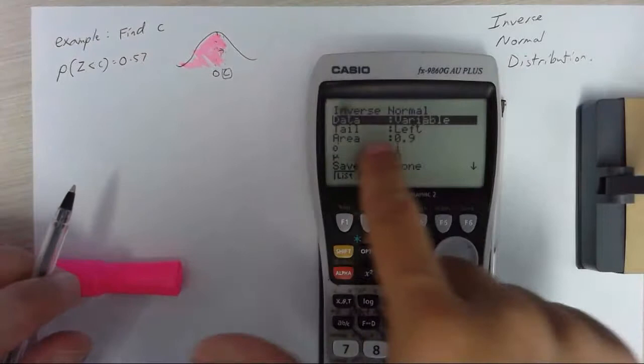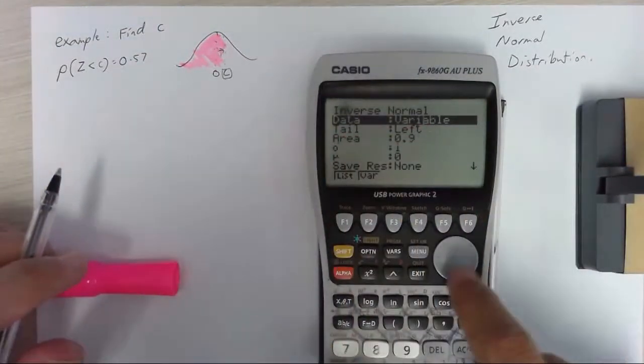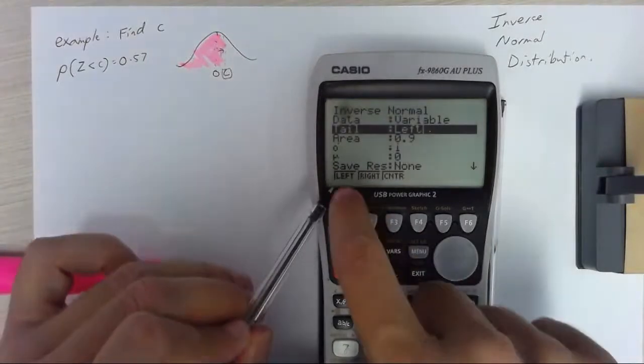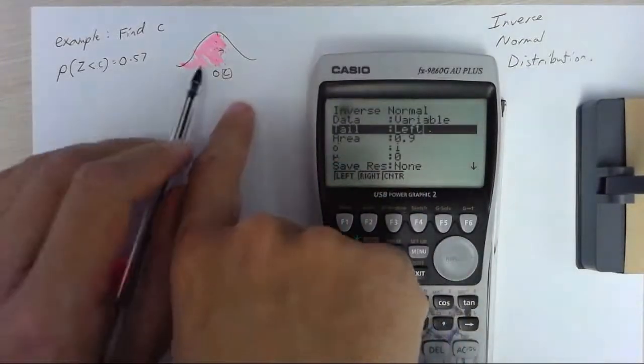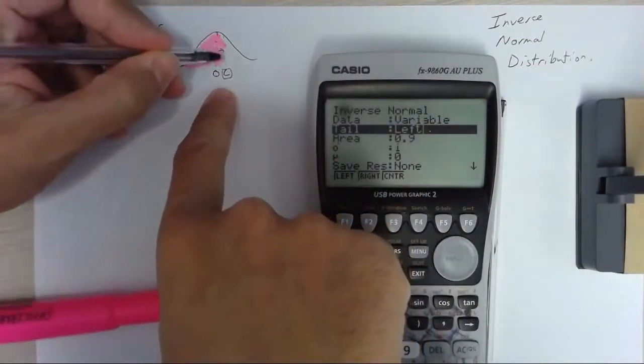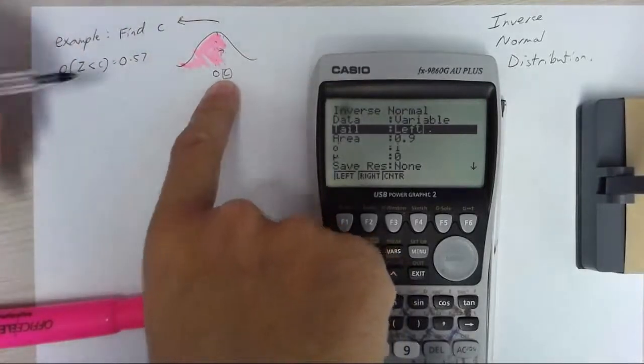Okay now from here data variable tail left. Watch what happens when I go to tail. I can have a left tail, a right tail or a center tail.